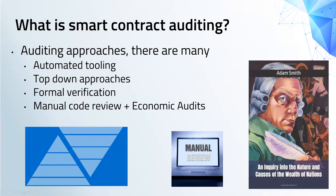At a high level, smart contract auditing can effectively be grouped into the following main categories: automated approaches, top-down approaches, formal verification, and manual code review and economically oriented audits. These approaches are not mutually exclusive, but I'll use this as a frame that's useful for separating key points between them.